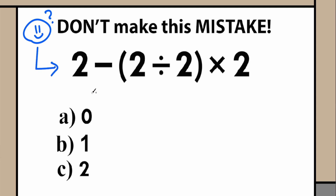Here you can see this question in the middle of the screen. We have 2 minus, right here we have parentheses, 2 divided by 2 and times 2. So what is the correct answer? I suggest you pause the video, write your solution down in the comment section, and we will check our answers here in just a few minutes. Right here we have three options so we can easily check our solutions.